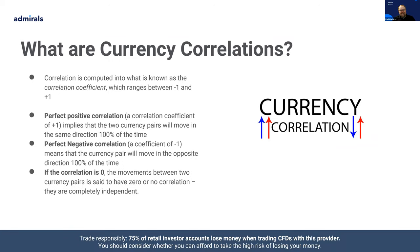Correlation is computed into what is known as the correlation coefficient, which ranges between minus one and plus one. A perfect positive correlation — a coefficient of plus one — implies that the two currency pairs move in the same direction 100% of the time. A perfect negative correlation — a coefficient of minus one — means the currency pair will move in the opposite direction 100% of the time. And if the correlation is zero, the movement between the two currency pairs is said to have zero or no correlation — they are effectively completely independent.